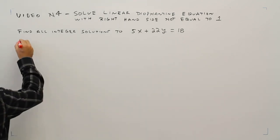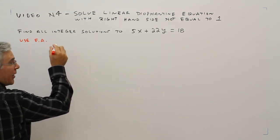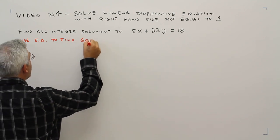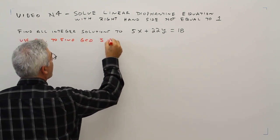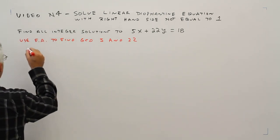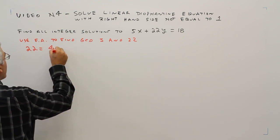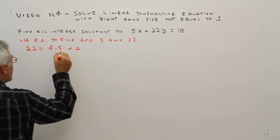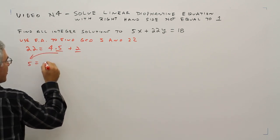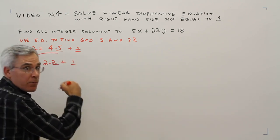Step 2: Use the Euclidean algorithm to find the GCD of 5 and 22. I'm going to write the larger number first. 22 is 4 times 5 plus 2. Bring these over. 5 equals 2 times 2 plus 1. Bring these over.